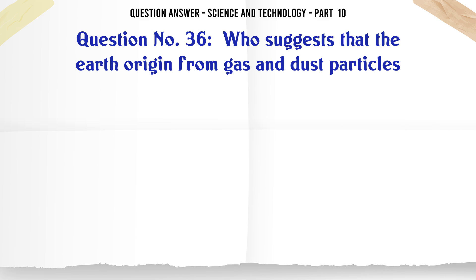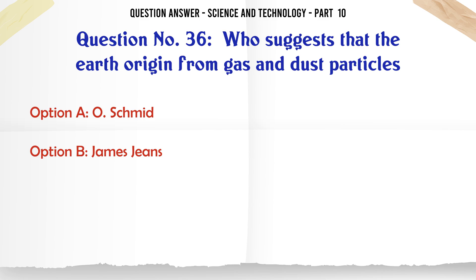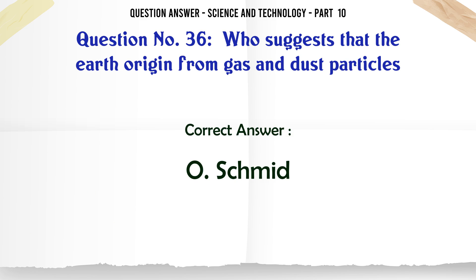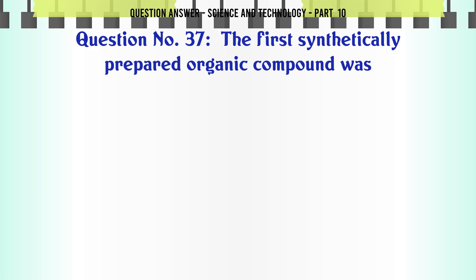Who suggested that the earth originated from gas and dust particles? A. Oshmied. B. James Jeans. C. F. Hoyle. D. H. Alfven. The correct answer is Oshmied.